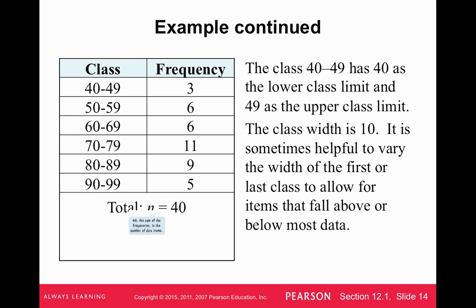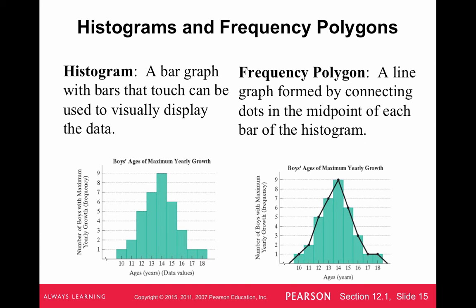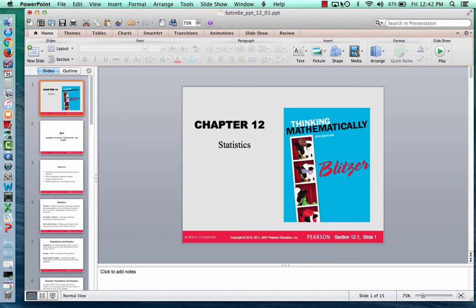We can then take this data and make a histogram. For example, the histogram from the maximum growth data set shows one kid with maximum growth at age 10 and nine kids at age 14 — this data has a bell shape, showing most kids had their maximum growth between ages 13 and 15. A frequency polygon puts a curve or line above the histogram. That's basically it for section 12.1. We'll continue this unit for the rest of Chapter 12.